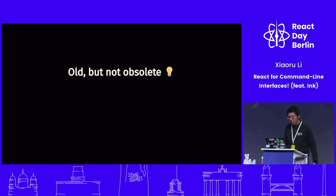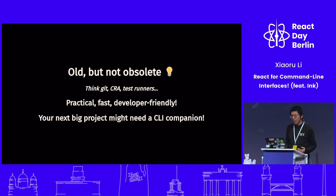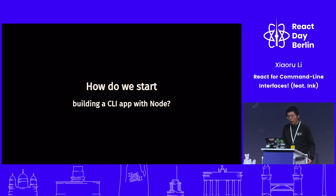As it turns out, these kinds of apps are still super relevant today. Especially when you are a developer, we always rely on CLI apps like Git or create-react-app, because they are practical, fast, and developer friendly. And if you are building something like a library or framework, a CLI companion app will be super useful to let your users set up your project as well.